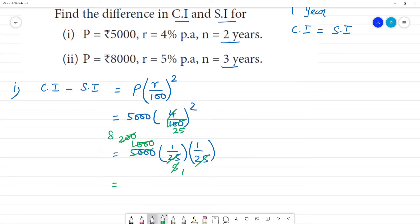The difference is rupees 8. For 3 years take the formula P into r by 100 whole square.